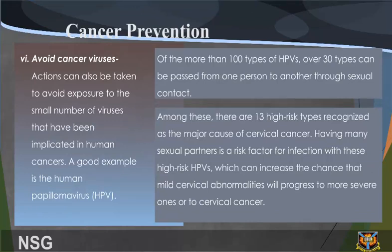6. Avoid Cancer Viruses. Actions can also be taken to avoid exposure to the small number of viruses that have been implicated in human cancers. A good example is the human papillomavirus (HPV). Of the more than 100 types of HPV, over 30 types can be passed from one person to another through sexual contact. Among these, certain high-risk types are recognized as the major cause of cervical cancer. Having many sexual partners is a risk factor for infection with these high-risk HPVs, which can increase the chance that mild cervical abnormalities would progress to more severe ones or to cervical cancer.